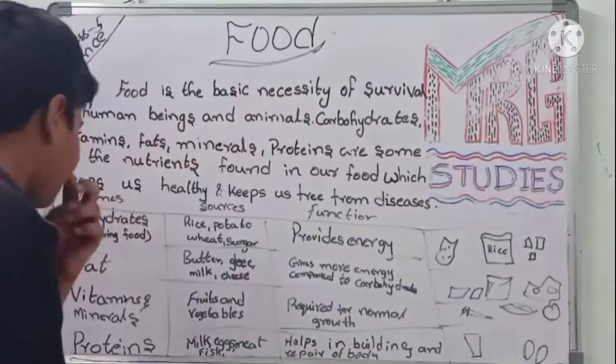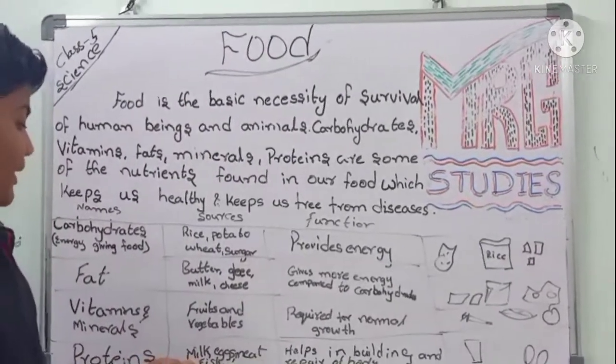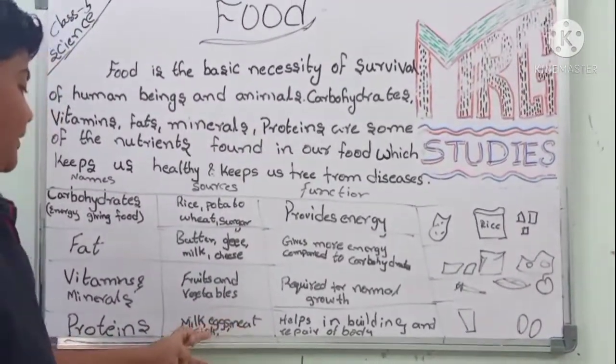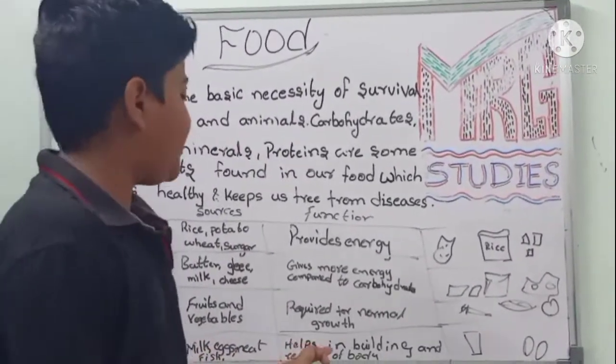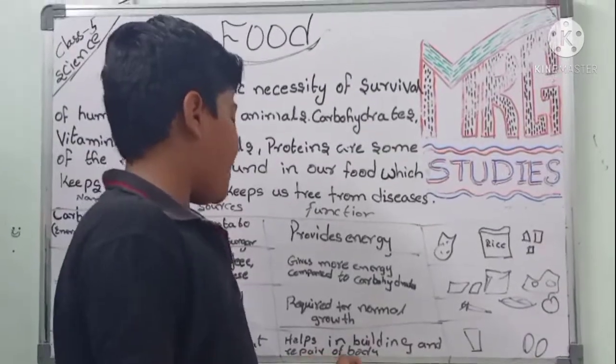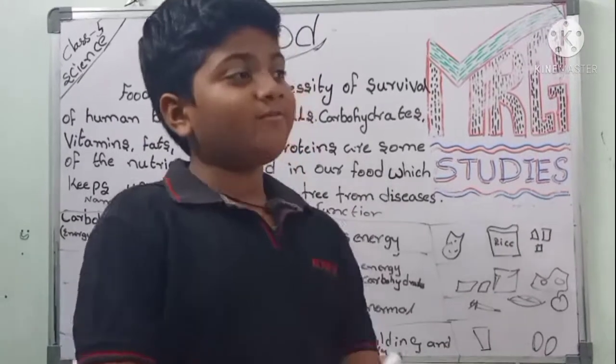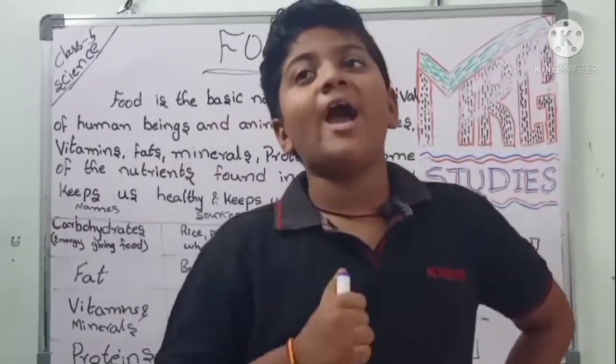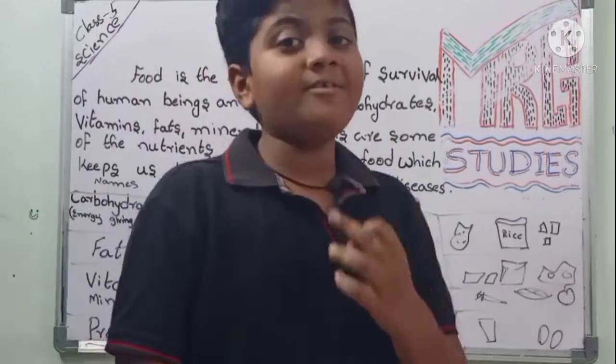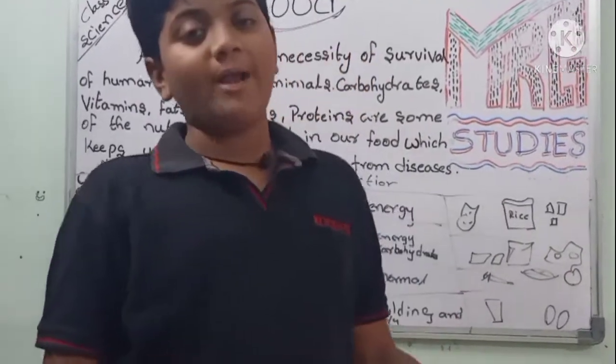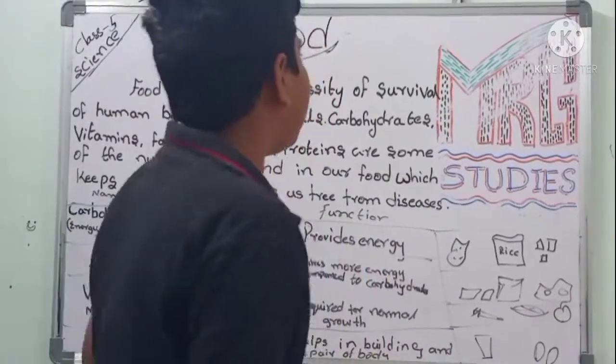Proteins from milk, eggs, meat, and fish help in building and repair of body and bones. When we drink milk, we become very strong. When we eat eggs, we also become very strong, and meat and fish also help.